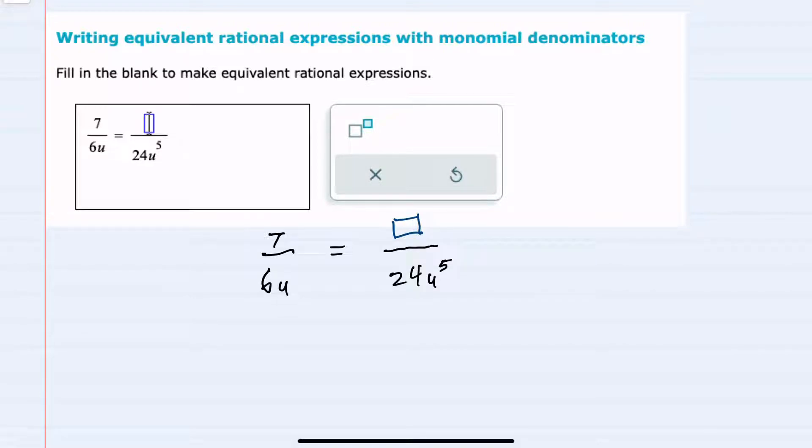And to do so, I'll get a common denominator between the left-hand side and the right-hand side. And then the numerators will have to also be equal. And I'll start by looking at the numeric part of each of these.